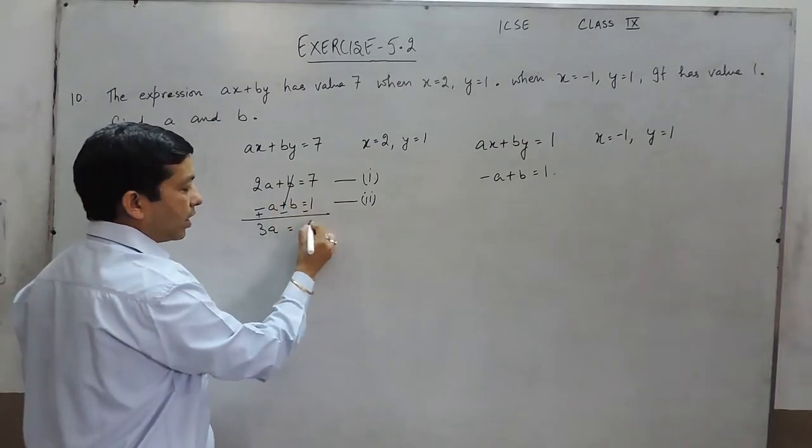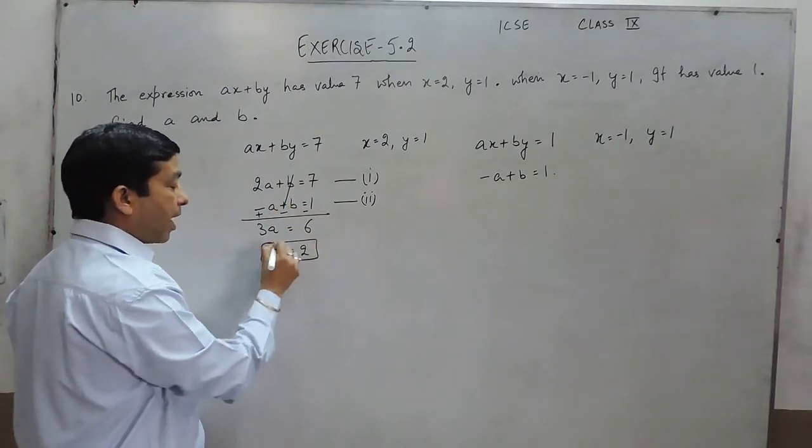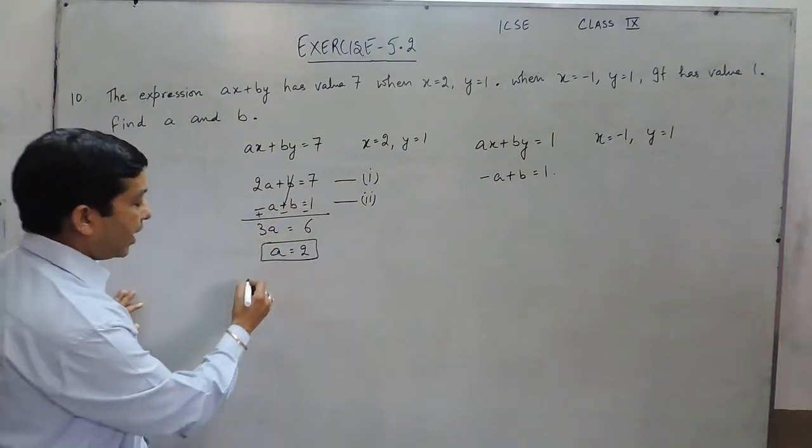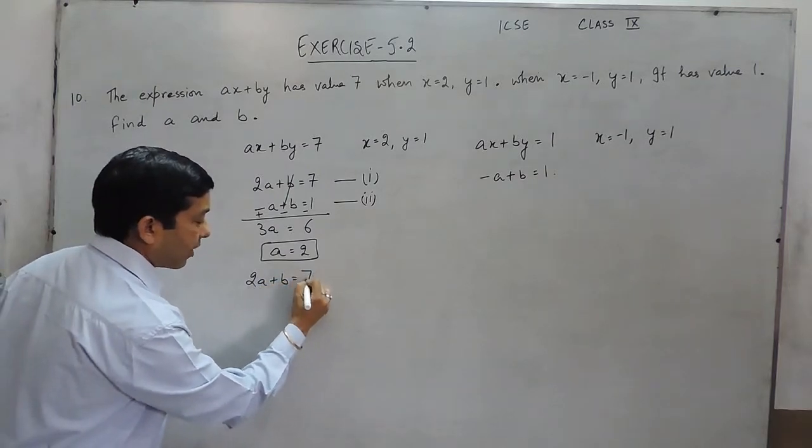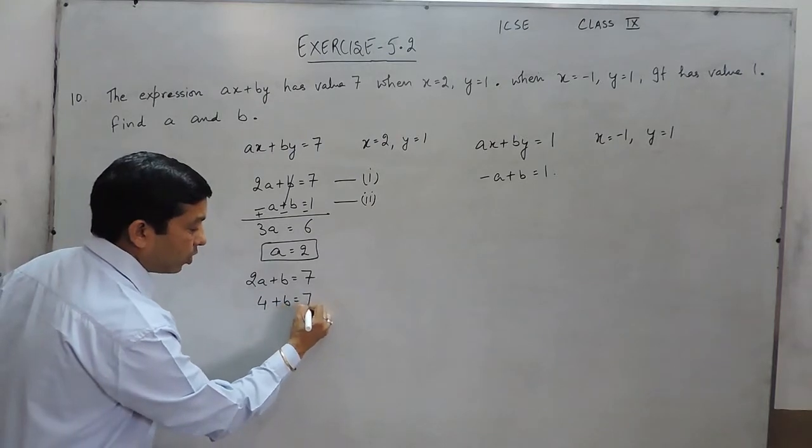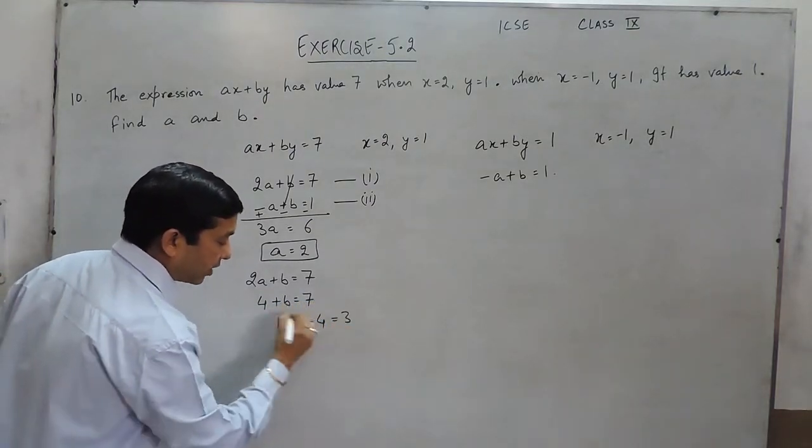It becomes 3a. This can be cancelled out as equals to 6, or the value of a becomes 2. When I put the value of a, 2, in the first equation, it becomes 2a plus b is equal to 7. The value of a is 2, so 4 plus b is equal to 7, or the value of b becomes 7 minus 4, that is 3.